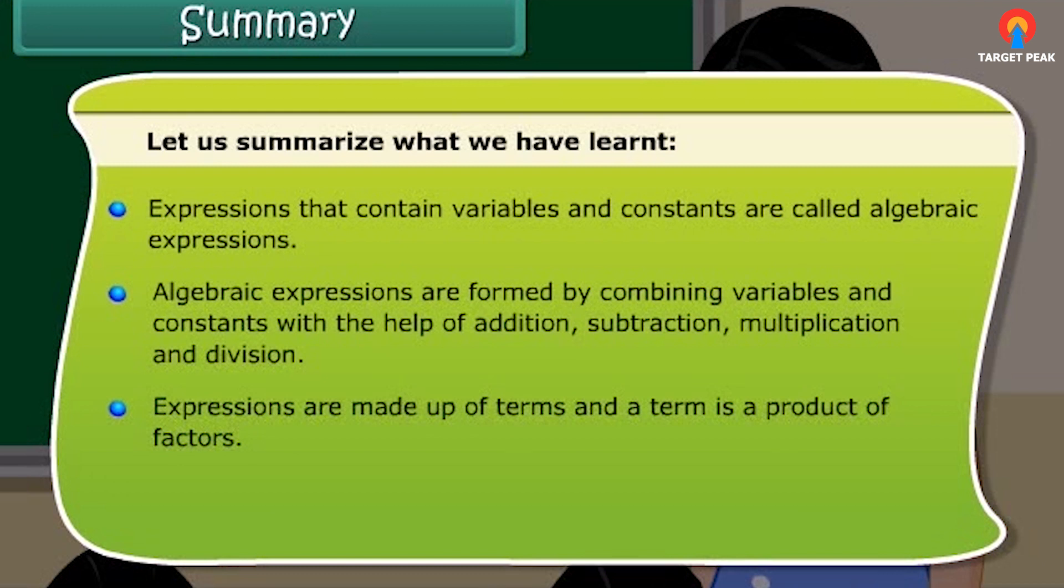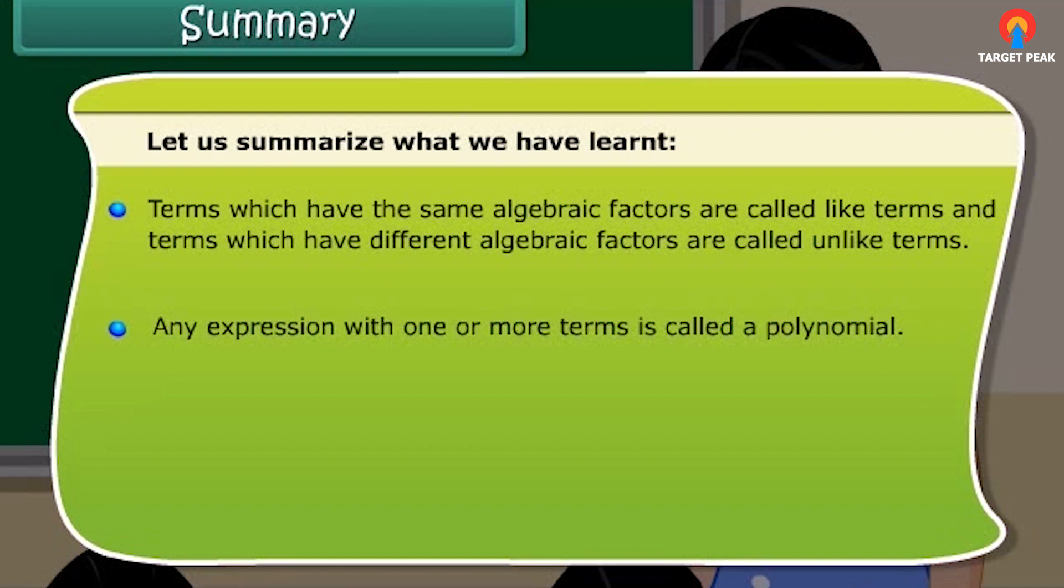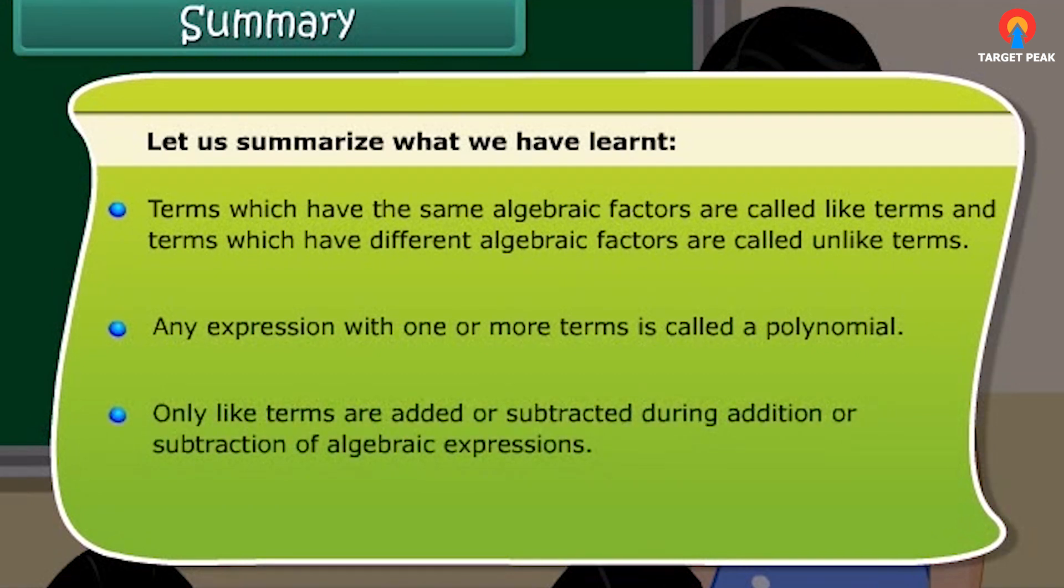Expressions are made up of terms and a term is a product of factors. The coefficient is the numerical factor in the term. Terms which have the same algebraic factors are called like terms and terms which have different algebraic factors are called unlike terms. Any expression with one or more terms is called a polynomial. Only like terms are added or subtracted during addition or subtraction of algebraic expressions.